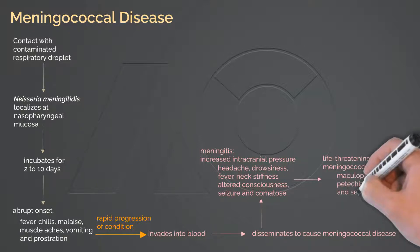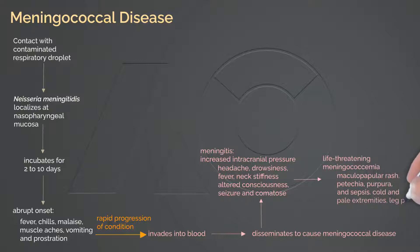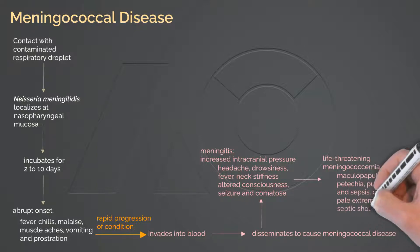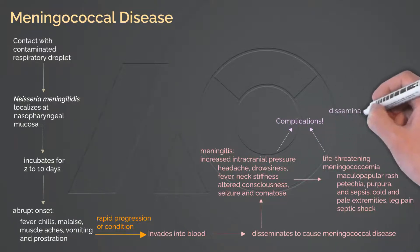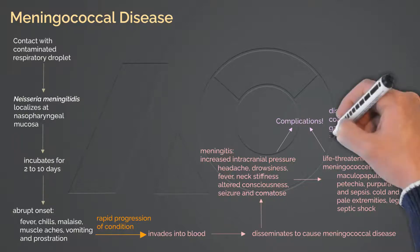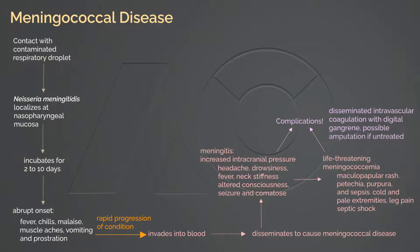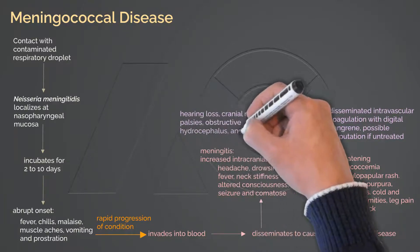Affected circulation leads to cold and pale extremities and leg pain. When the condition evolves rapidly, septic shock can occur, leading to further complications. The circulatory complication of disseminated intravascular coagulation leads to digital gangrene, and if not promptly treated, loss of digits or limbs could result. Neurological complications include hearing loss, cranial nerve palsies, obstructive hydrocephalus, and disabilities.